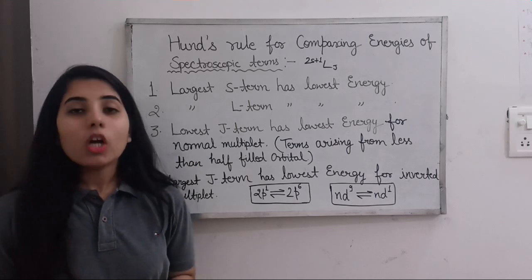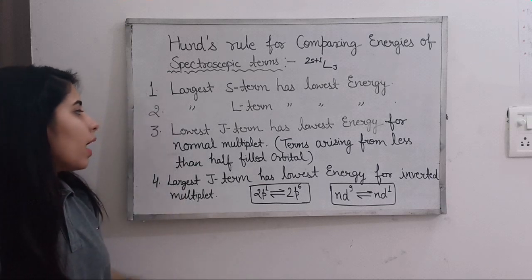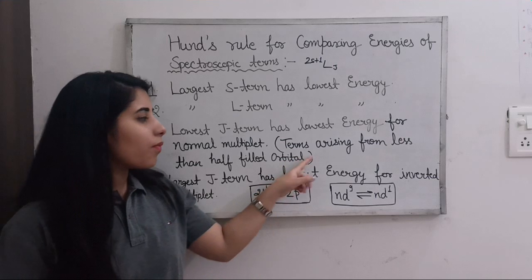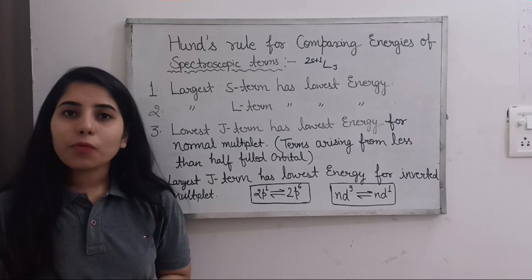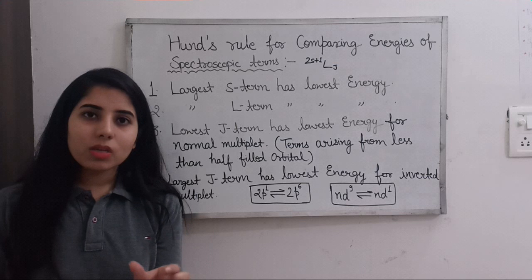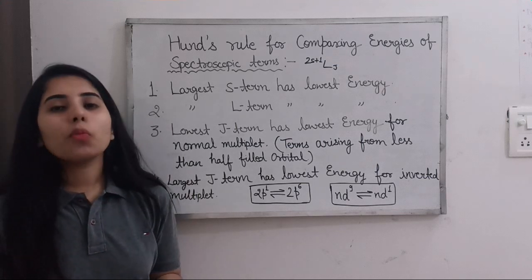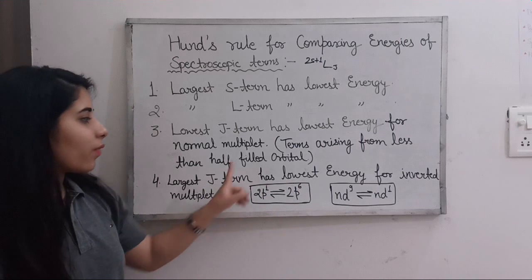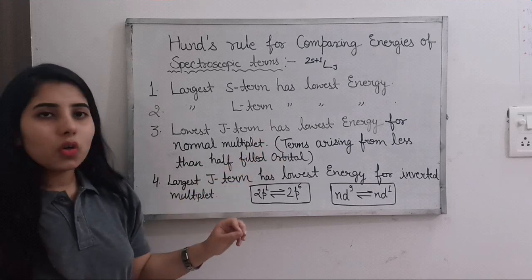There is one more rule: terms arising from less than half-filled orbitals will have the lowest energy. When you write the electronic configuration of any element, you look at the very last term and focus on whether it is less than half-filled or more than half-filled. If it is less than half-filled, this rule applies; if more than half-filled, a different rule applies.